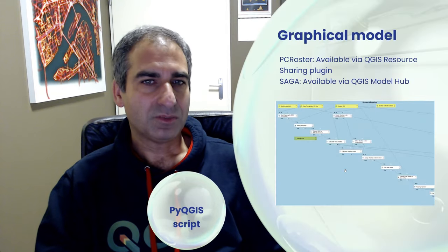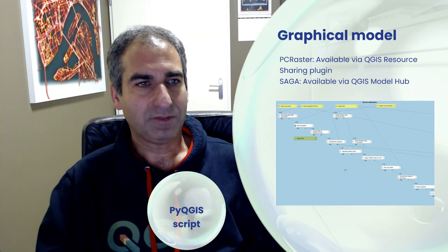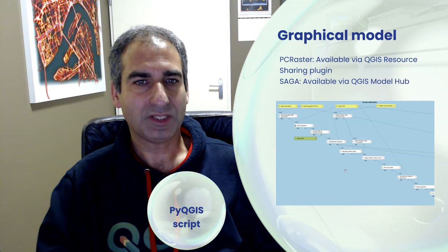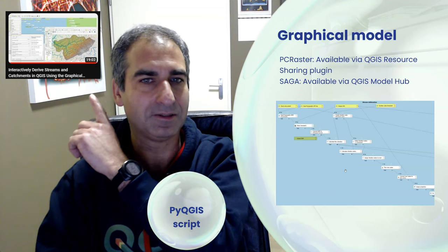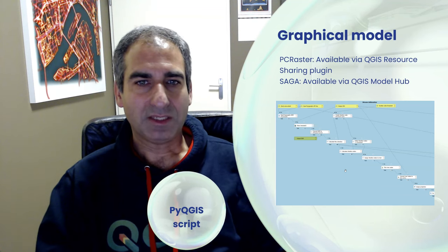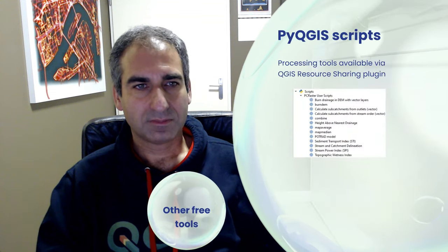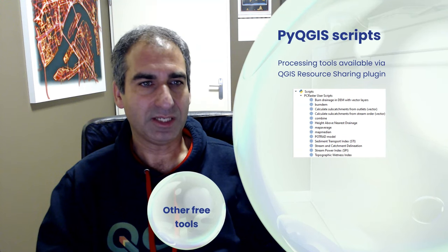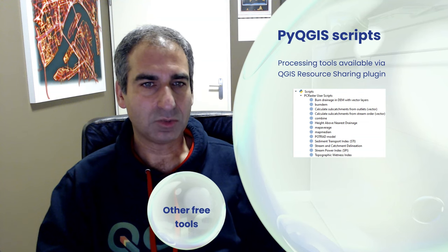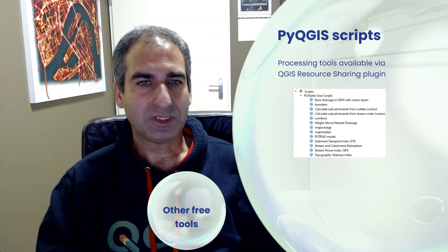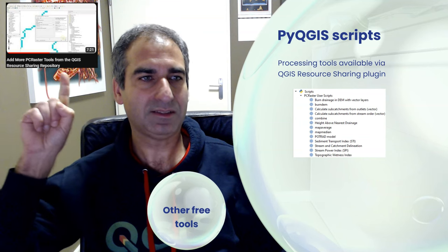If you prefer to automate, you can create a graphical model. With PCRaster, this is available for download via the QGIS resource sharing plugin, and I have more videos on my YouTube channel explaining this. After that, you can make a PyQGIS script that does the job in an easier way — either for a user or for yourself when you want to repeat tasks. These become available as processing tools in the processing toolbox. I've shared a few of them using the QGIS resource sharing plugin, and there's another video that shows how to do that. For Saga, there's one available via the QGIS model hub.